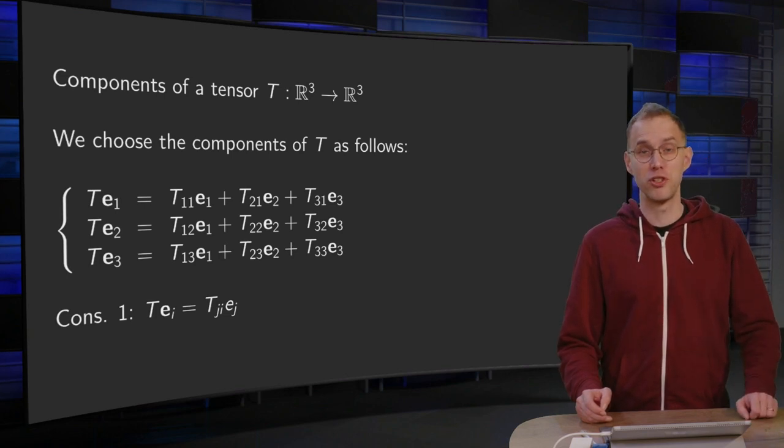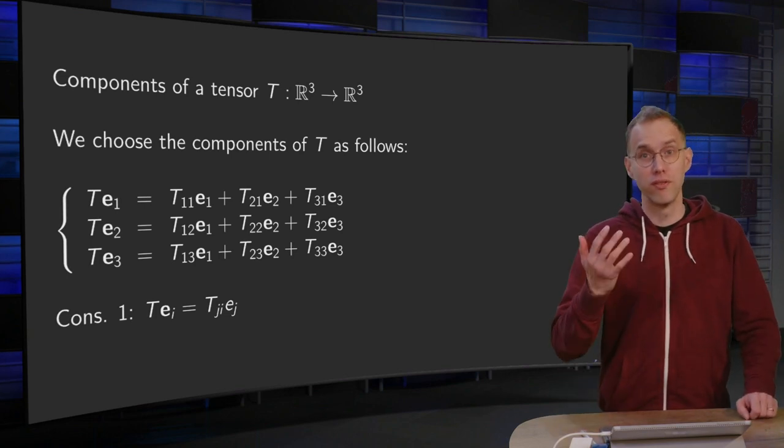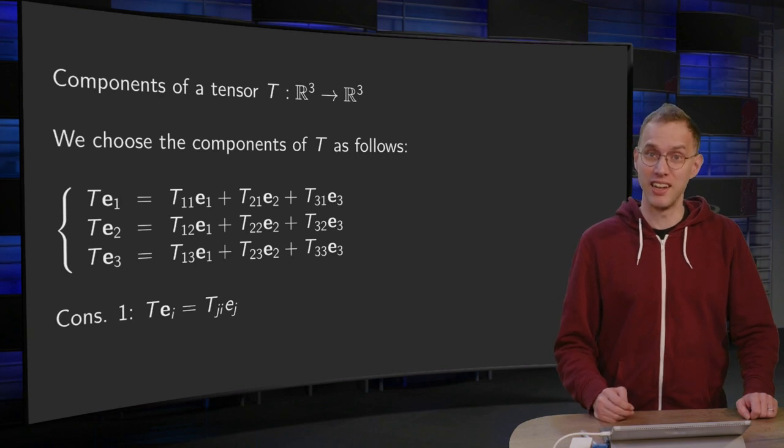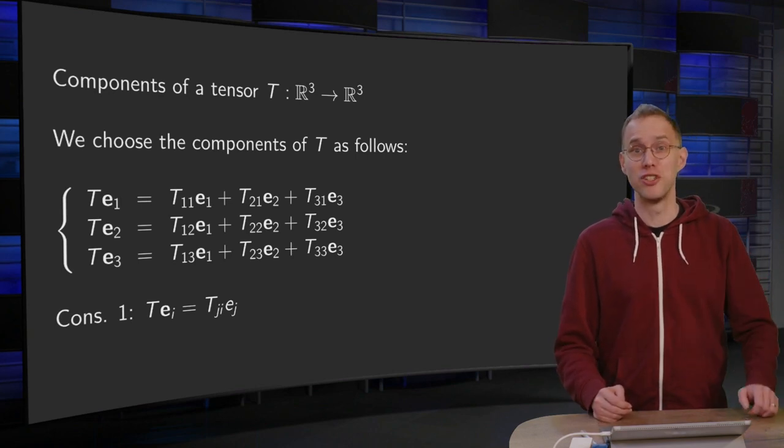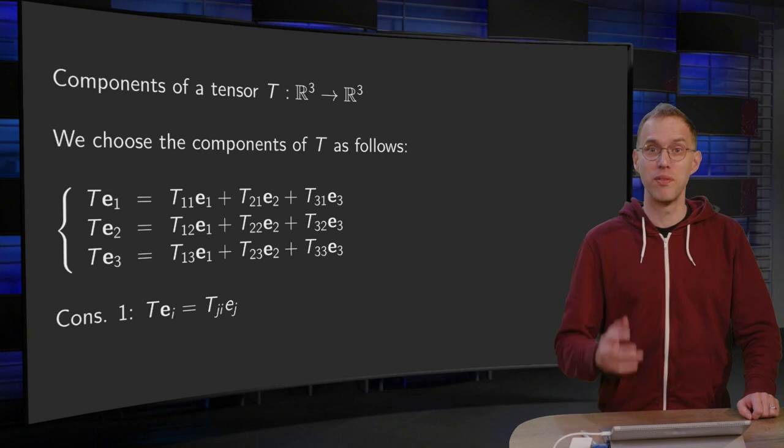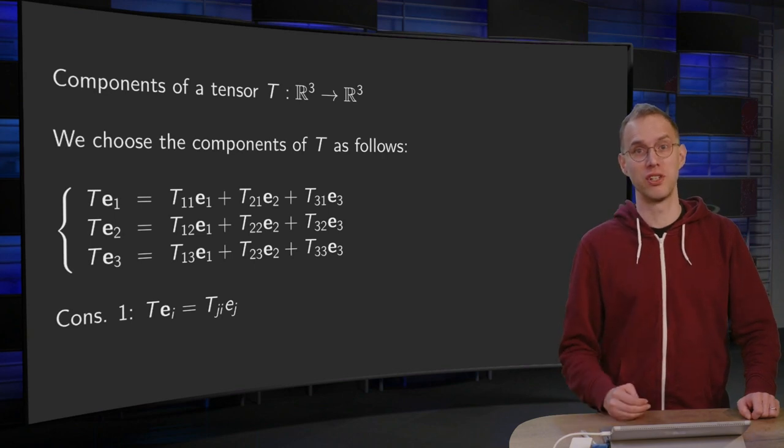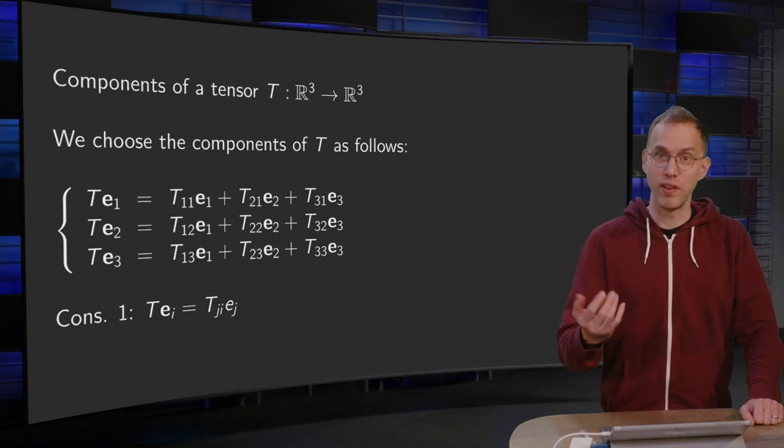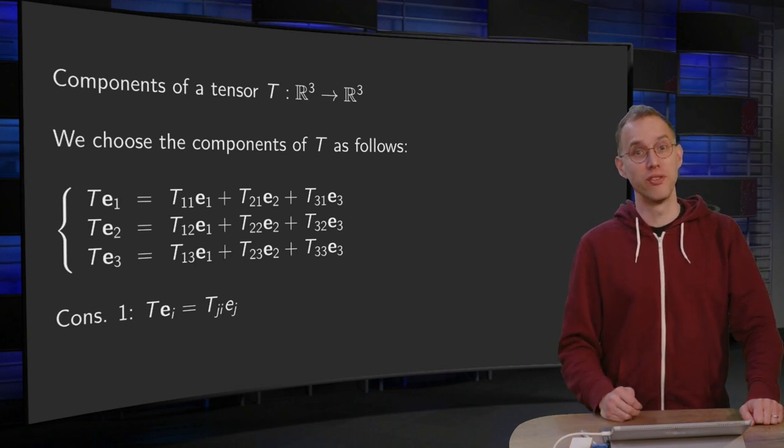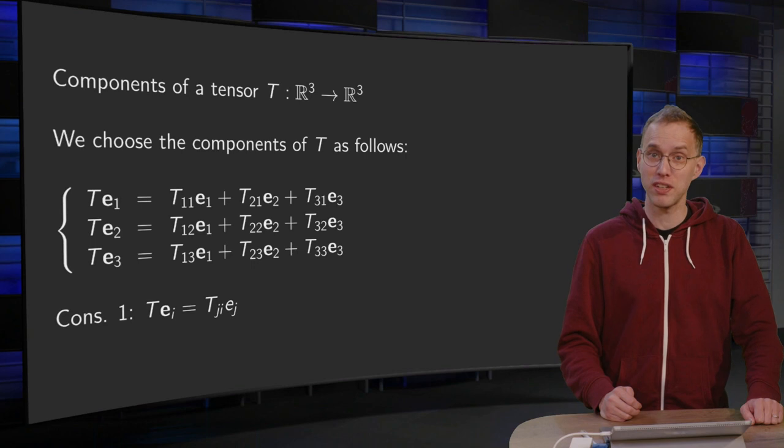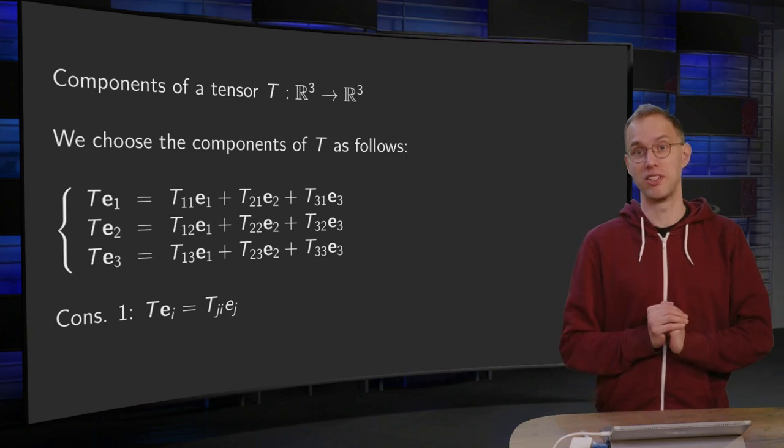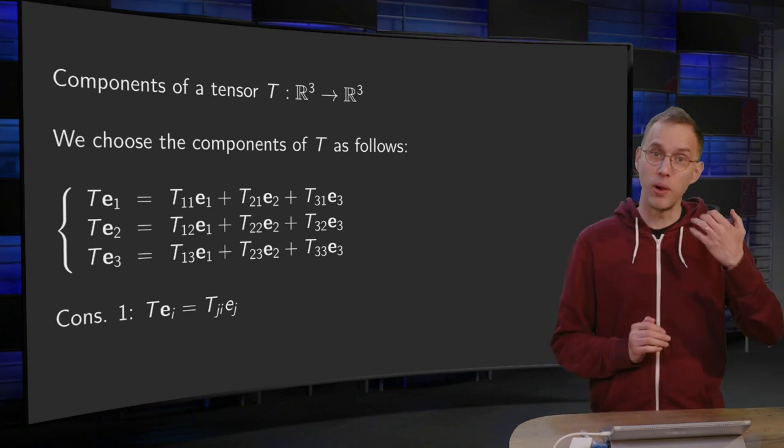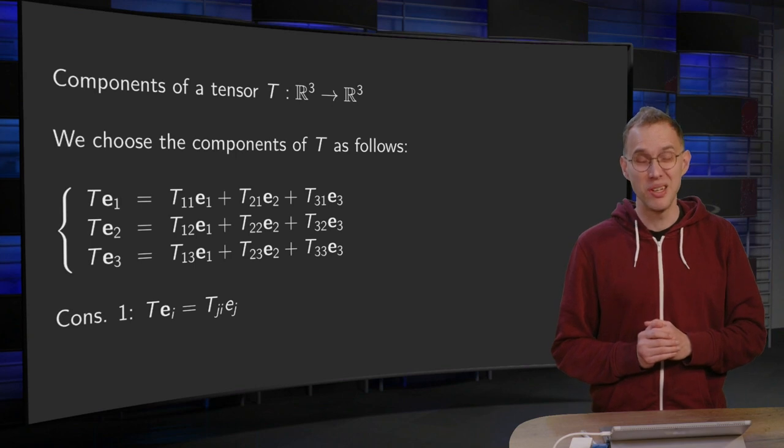How can we specify a certain tensor T? Fortunately, a tensor is linear. This means that it suffices to specify what happens to our basis vectors. So we need to choose a basis first. And when we have chosen this basis, the three images of the basis vector fully determine our tensor T. So in other words, nine numbers will specify our tensor.